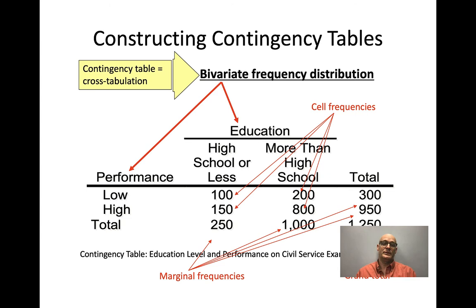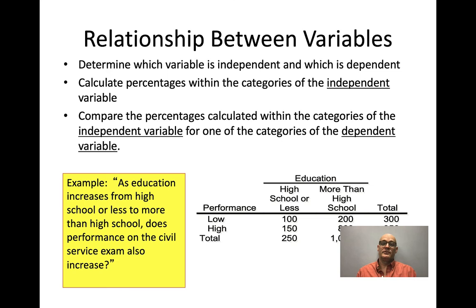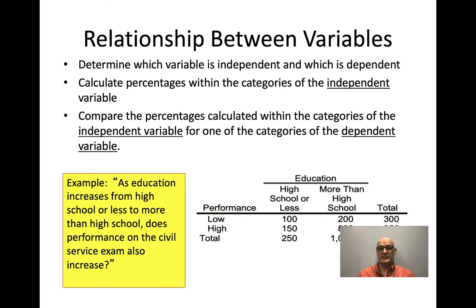To figure out the relationship, remember which variable is independent and which is dependent. We can write a hypothesis: 'As education increases, does performance on the civil service exam increase?' Or 'we expect a positive relationship between education and performance on the exam.' The null hypothesis is that there is no relationship between education and test performance.